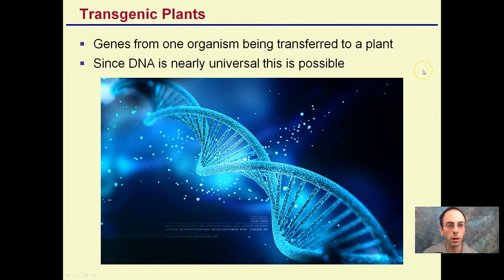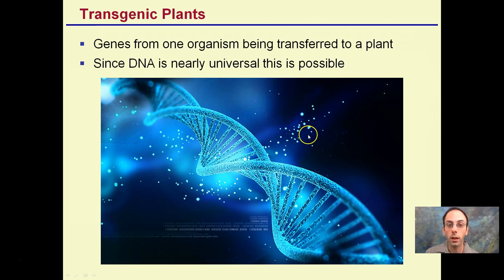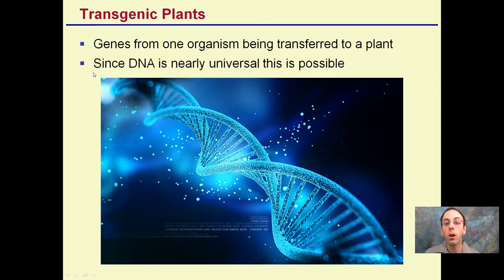Transgenic plants involve genes from one organism being transferred to a plant. Since DNA is nearly universal, this is possible because DNA — regardless if it's from a human, a jellyfish, a corn plant, or a palm tree — all contains the universal code, allowing us to move genes from animals to plants, or from one plant to another plant.